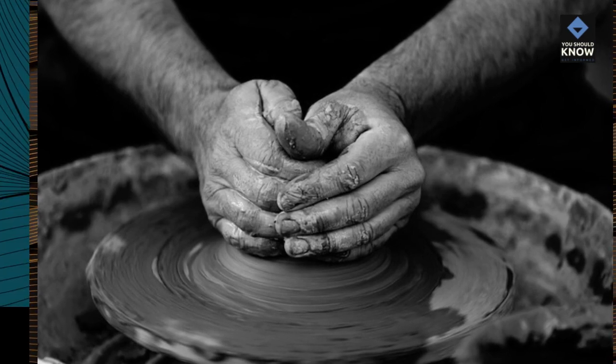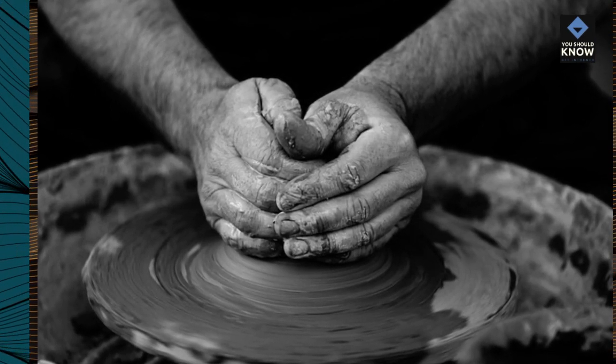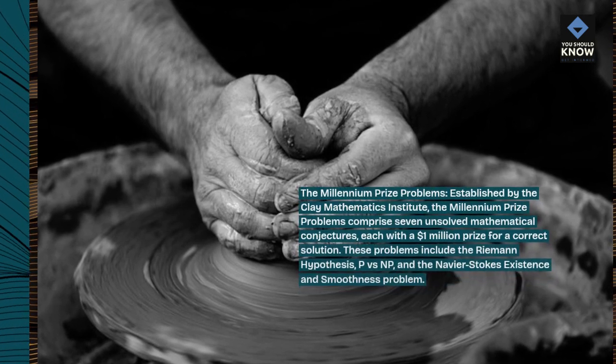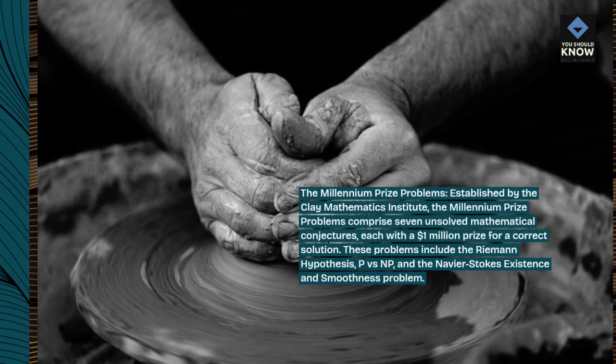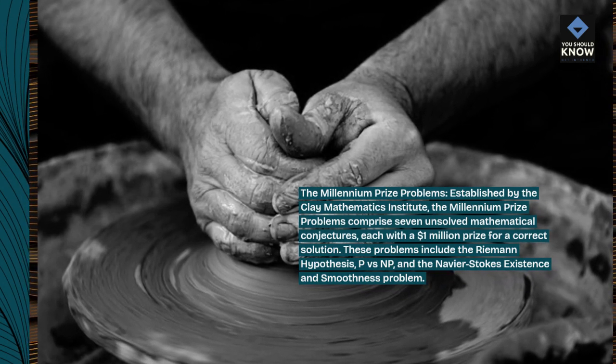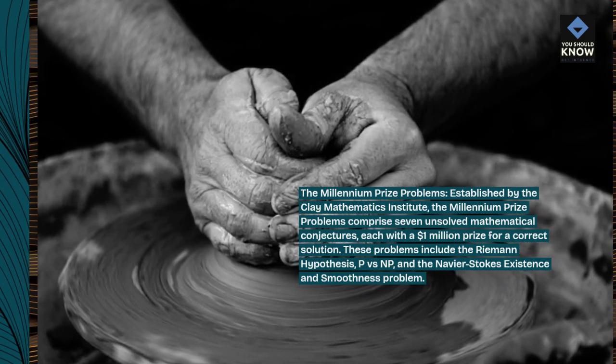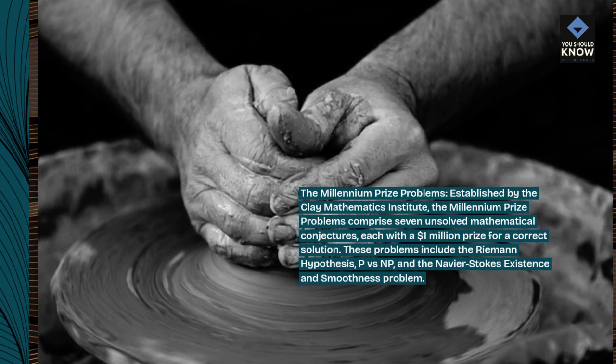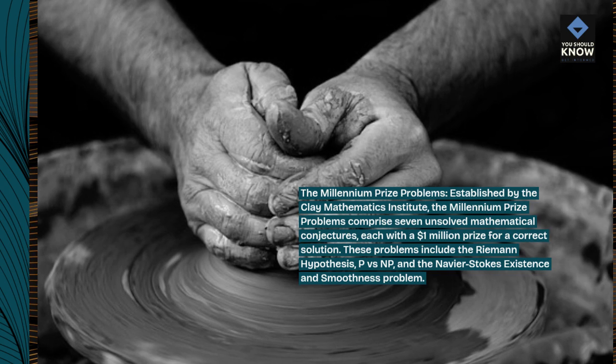The Millennium Prize Problems: Established by the Clay Mathematics Institute, the Millennium Prize Problems comprise seven unsolved mathematical conjectures, each with a $1 million prize for a correct solution. These problems include the Riemann hypothesis, P versus NP, and the Navier-Stokes Existence and Smoothness Problem.